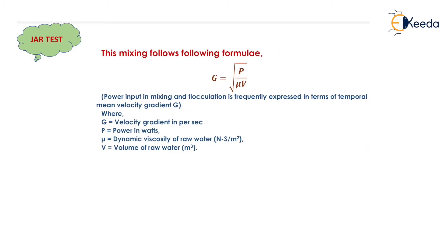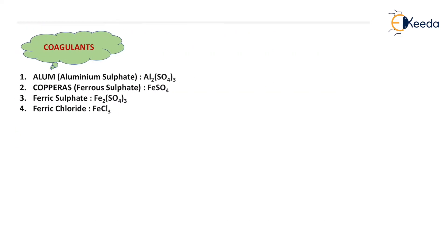In the jar test the mixing generally follows a formula: G = √(P / μV), where G is the velocity gradient in per second, P is the power in watts, μ is the dynamic viscosity in Newton·second per meter squared, and V is the volume in meter cube. So for mixing, G = √(P / μV).